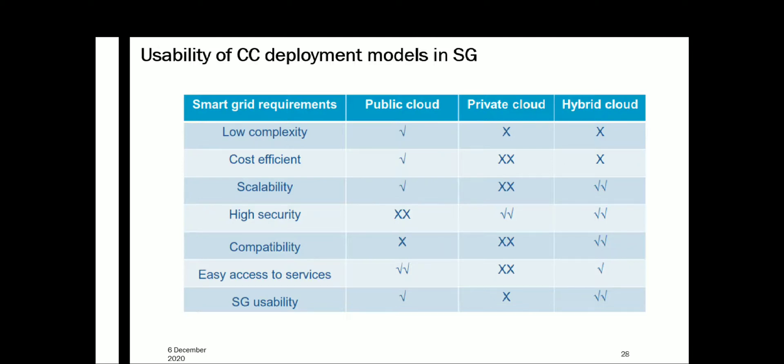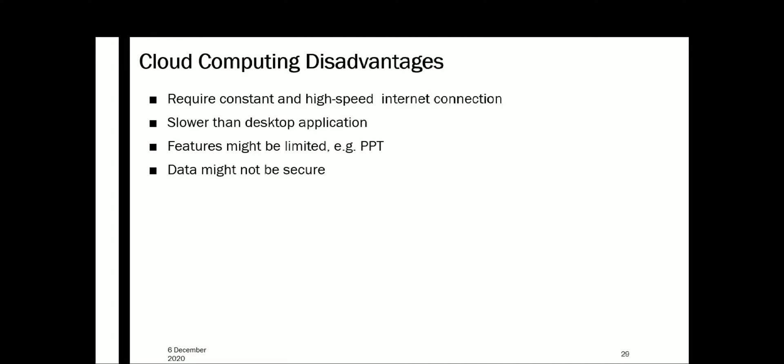For compatibility, the best option is hybrid cloud. For easy access to service, the best is public cloud, and for smart grid usability overall, the better option is hybrid cloud. Now let's look at cloud computing disadvantages.